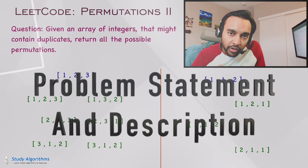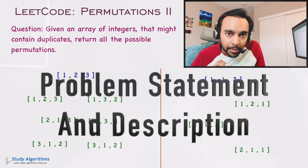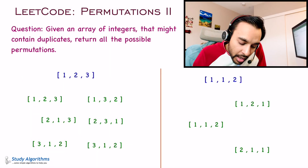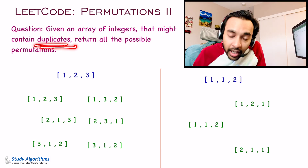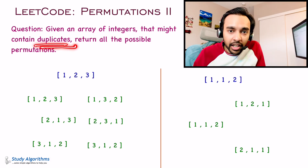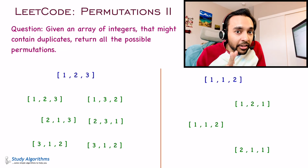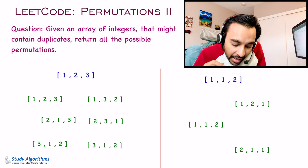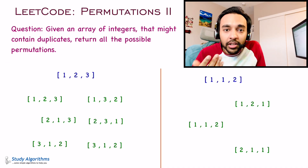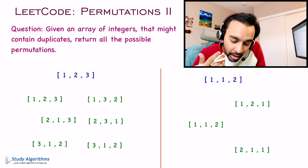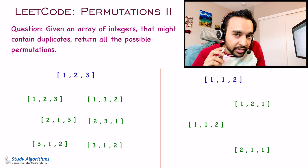Let us quickly make sure that we are understanding the problem statement correctly. You are given an array of integers that might contain duplicates. Duplicate is a very important term here, because that is what makes it different from the original problem permutations. Now when you are given this array, you have to return all the possible permutations or different arrangements.